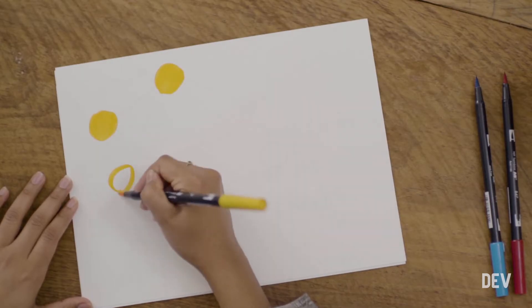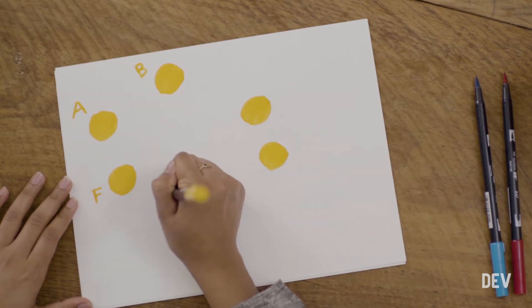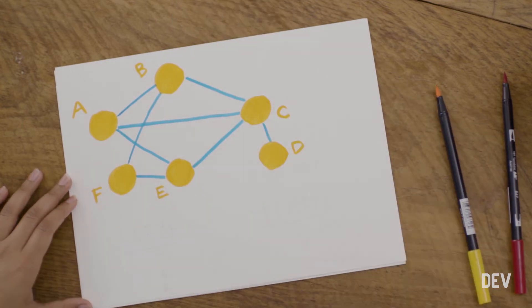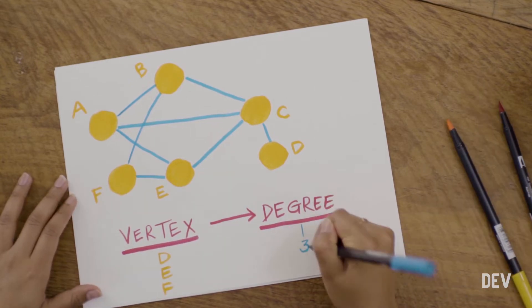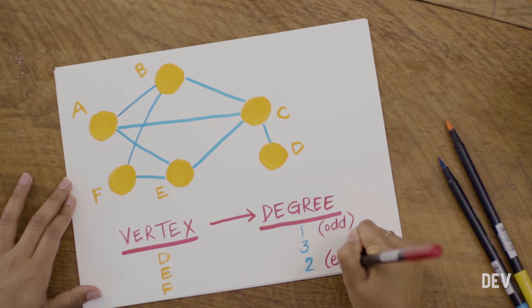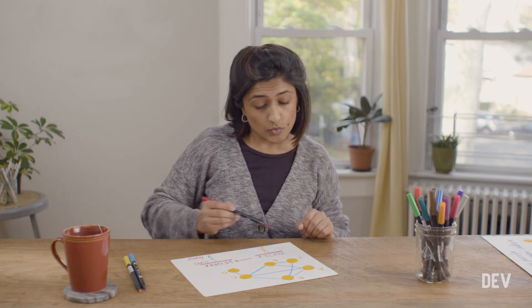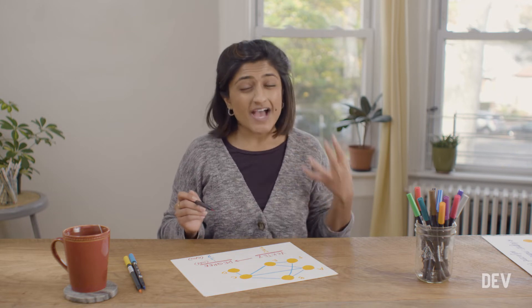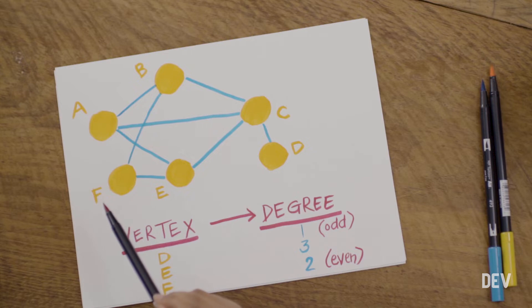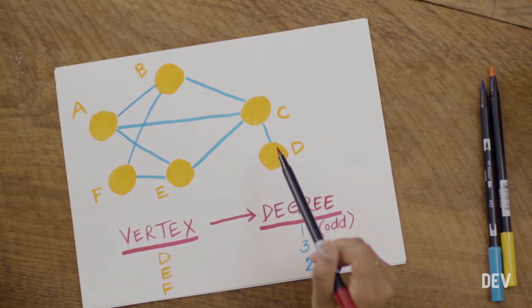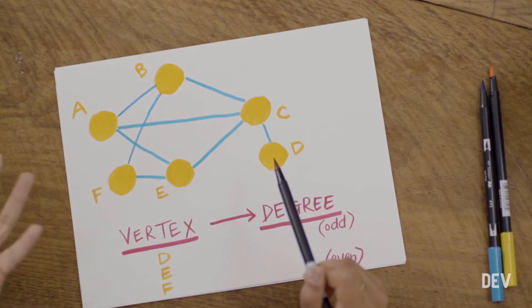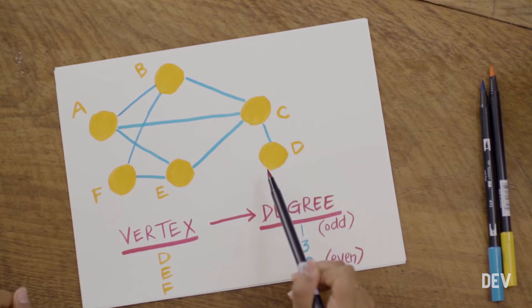The degree of a node is the number of nodes that are adjacent to it. Here's an example graph where all of the different nodes have varying degrees, and we can see how the degrees change how we talk about the node. For example, we have node D. D has only one neighbor, meaning it has only one edge connecting it to another node that is adjacent to it. Its neighbor is node C. So we can say that D has a degree of one. Another way of talking about this is by saying that D is an odd degree node.